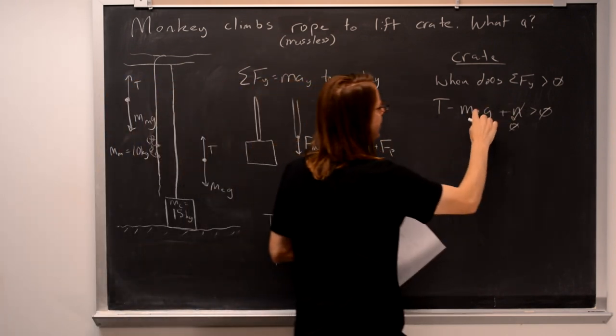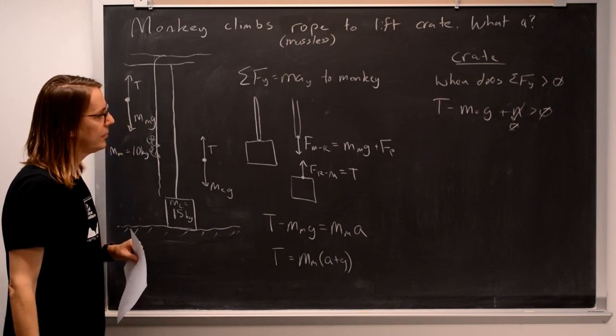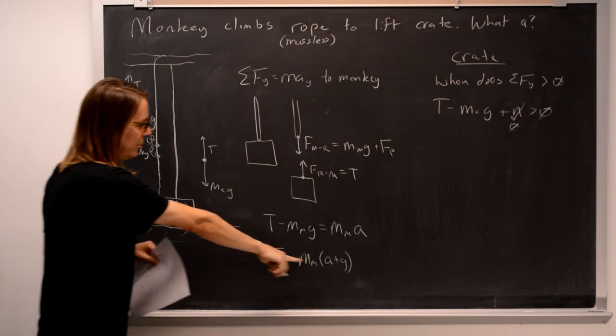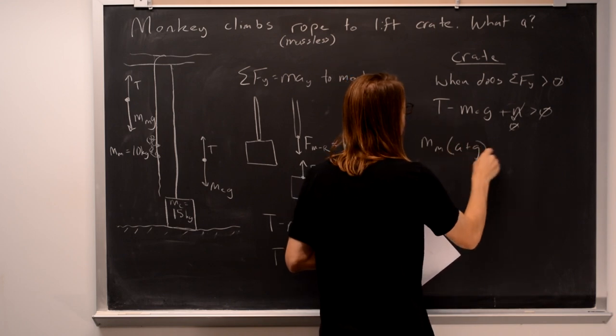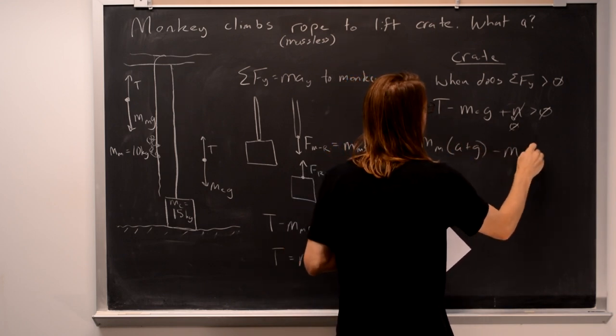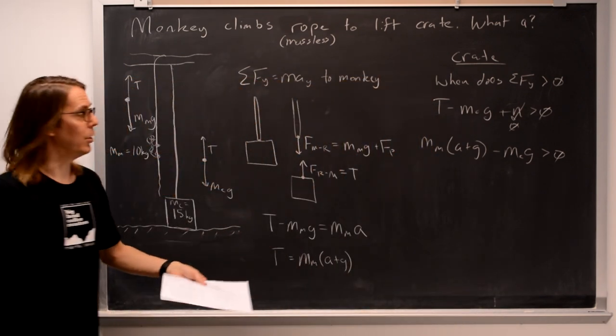So tension minus M_crate G is greater than zero. So tension, we plug this in. Mass of the monkey times acceleration plus G minus mass of the crate times G has to be greater than zero. And now we just plug in and get numbers.